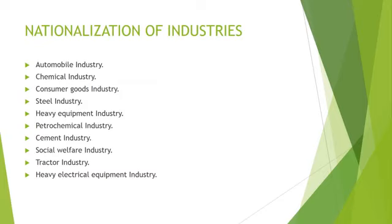Bhutto disagreed with the policies of capitalists and industrialists. Ten heavy industries were nationalized: automobile industry, chemical industry, consumer goods industry, steel industry, heavy equipment industry, petrochemical industry, cement industry, social welfare industry, tractor industry, and heavy electrical equipment industry.